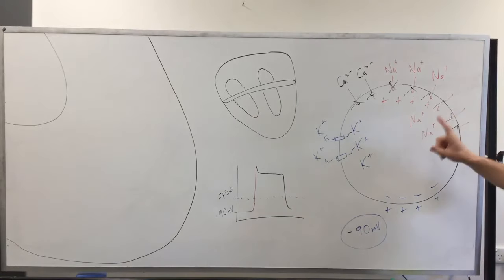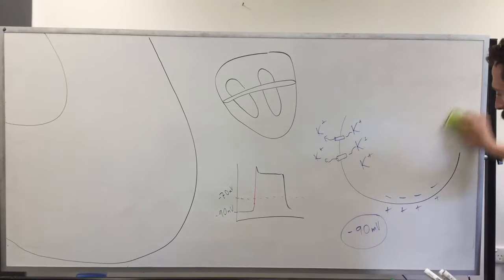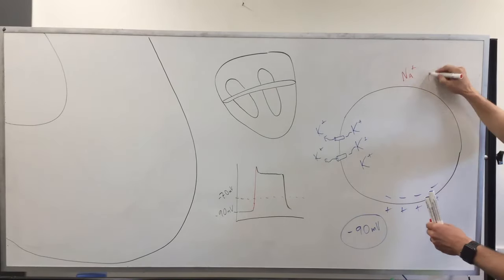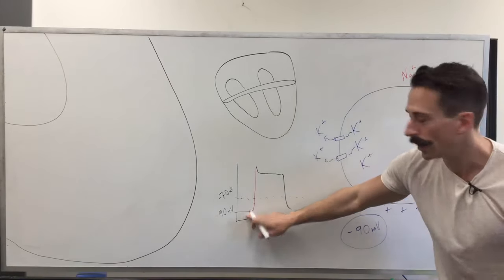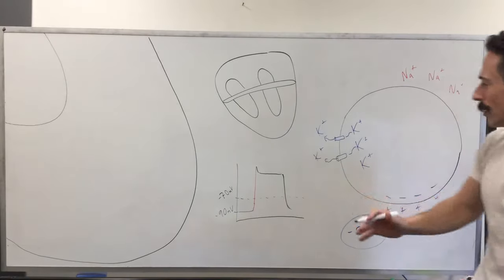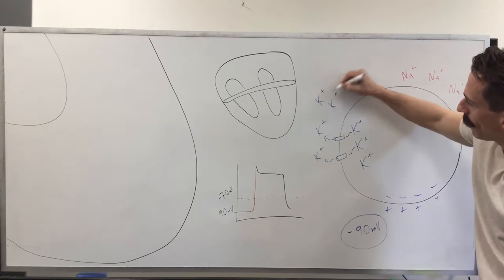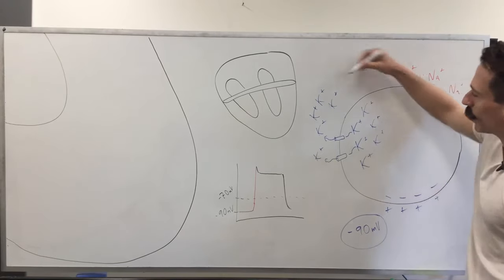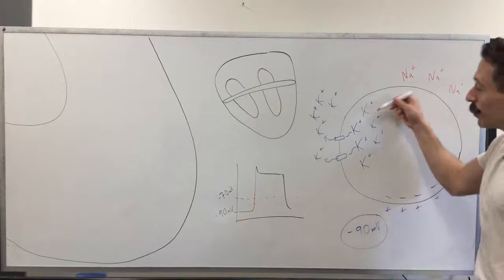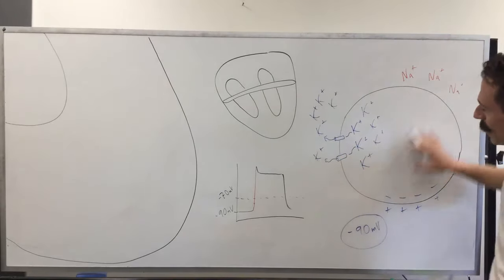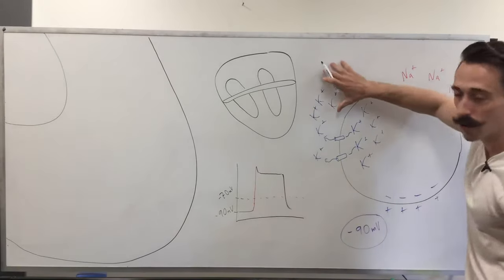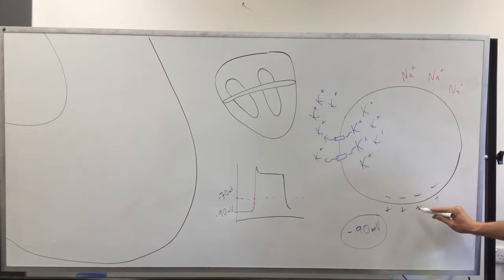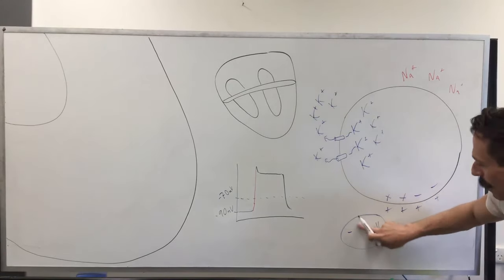Let's reset back to resting membrane potential: potassium leaking outside, sodium still outside, charge is negative 90. Now let's say something happens in which the concentration of potassium outside increases. Comparatively, there's still more potassium inside the cell but the concentration outside has increased, so its need to diffuse outside is reduced. If you increase the concentration outside, potassium really doesn't want to go outside as much, so potassium remains inside the cell — it's a little more positive. Instead of negative 90, it might be around negative 50.